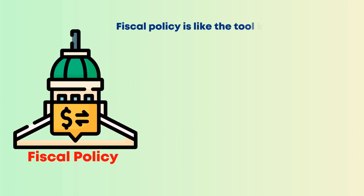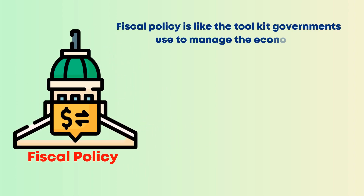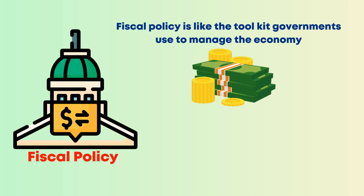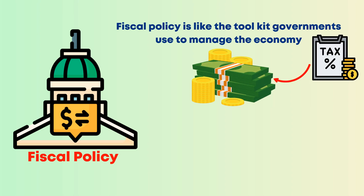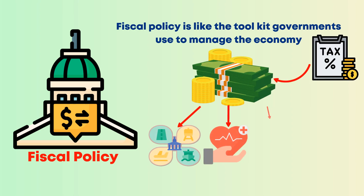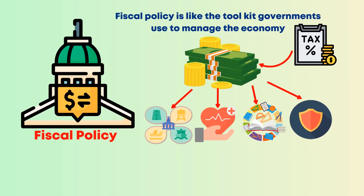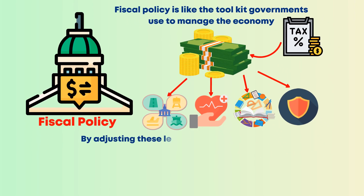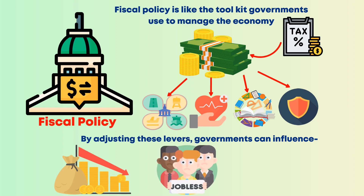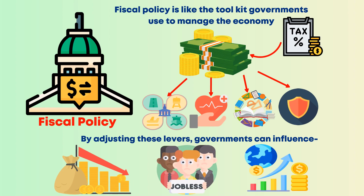Fiscal policy is like the toolkit governments use to manage the economy. It's all about how they collect money through taxes and then spend it on things like infrastructure, healthcare, education, and defense. By adjusting these levers, governments can influence inflation, unemployment, and overall economic growth.